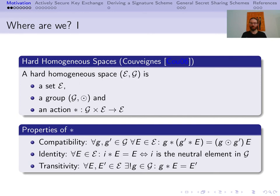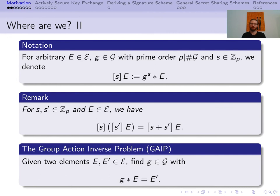This must only hold for the identity element I of G. And third, we consider transitivity. This says that for any two elements of E, there exists exactly one G in G that connects them. We will use the bracket notation throughout this work, for which we fix an element small g in capital G of prime order P. Thus, for any S in Z modulo P and any E in calligraphic E, we abbreviate G to the S combined with E as S in brackets E. The compatibility property then gives us the remarked equality.